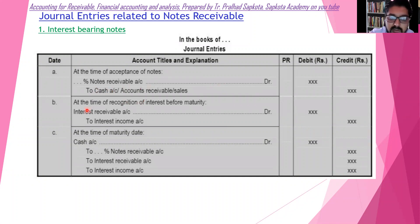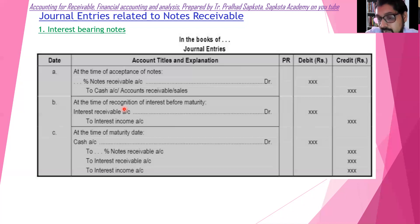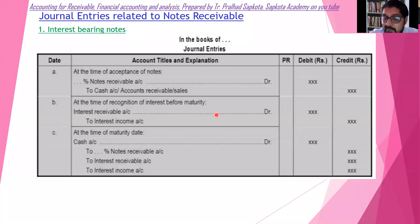At the time of recognition of interest before maturity — if you have an agreement of notes for 90 days, you need to record interest within that period. For a 3-month period, you record the accrued interest before maturity.